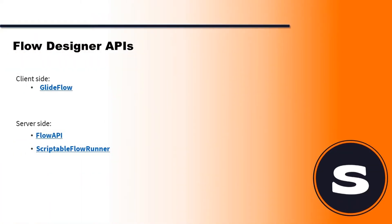In Flow Designer we've already mentioned that we've got a couple of APIs that we can play with. We've got a client-side API called GlideFlow, which is an awesome name, and we've got the server-side API - FlowAPI and ScriptableFlowRunner. I've done a previous video on that, so we're not going to talk about it. Today we're going to focus on GlideFlow.